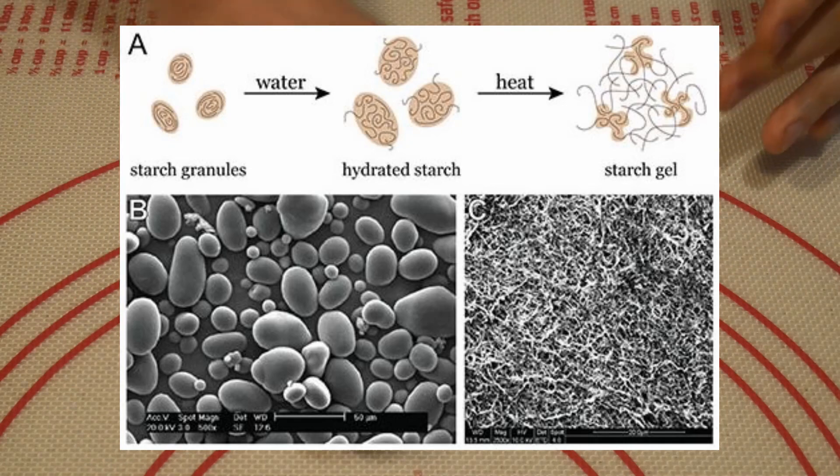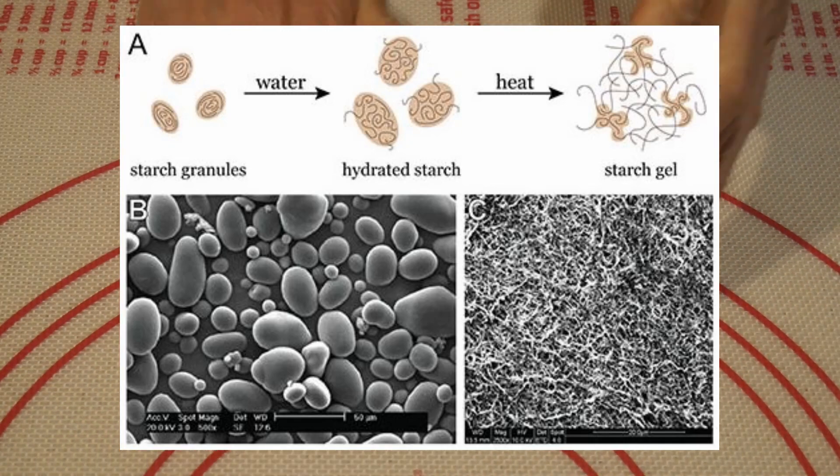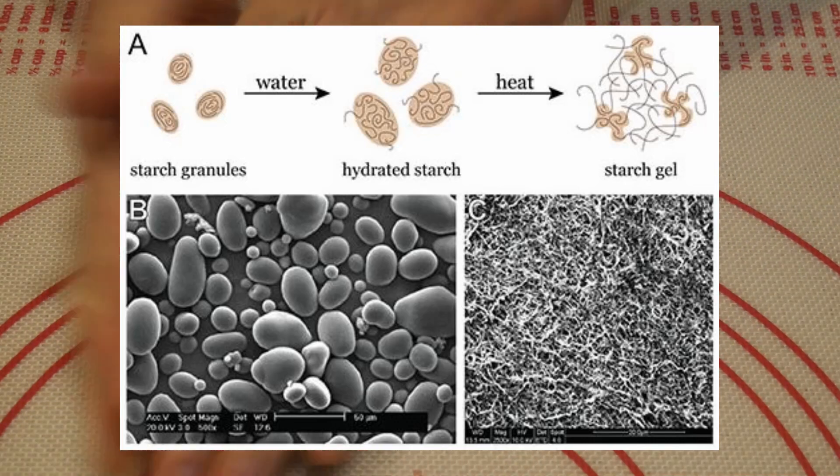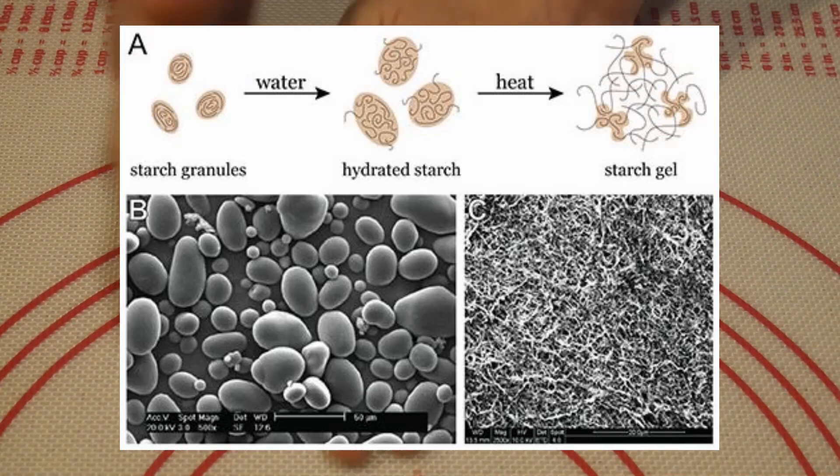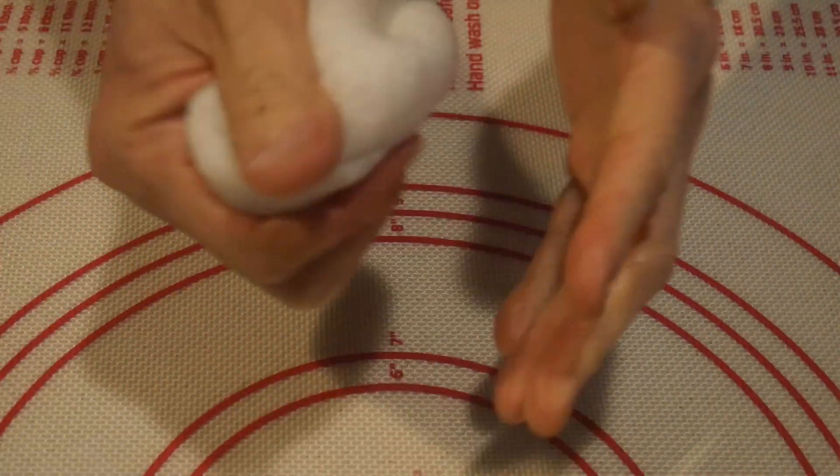Starches are basically tiny granules. When you add water to starch, they start to become hydrated. But when you heat the starch, then they form this gel-like structure. This is how you create the form and shape of the dough.